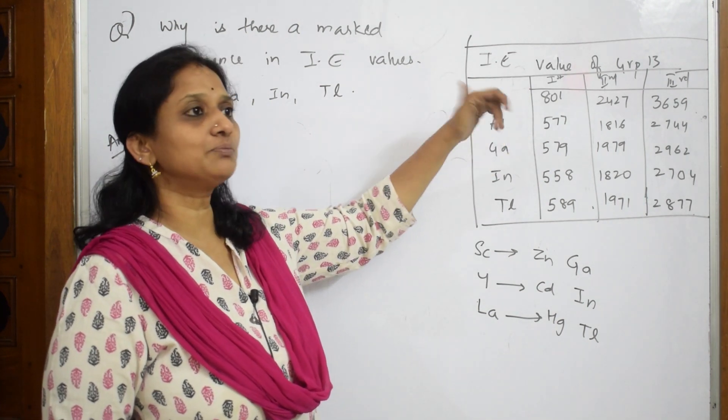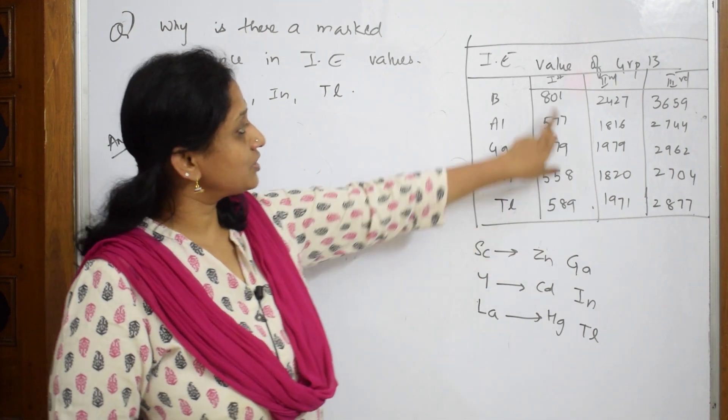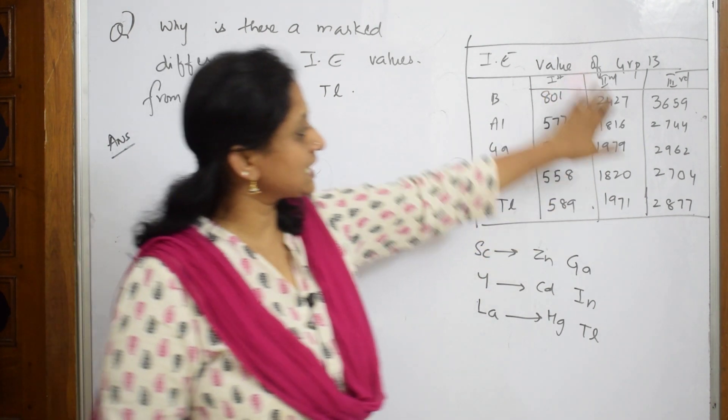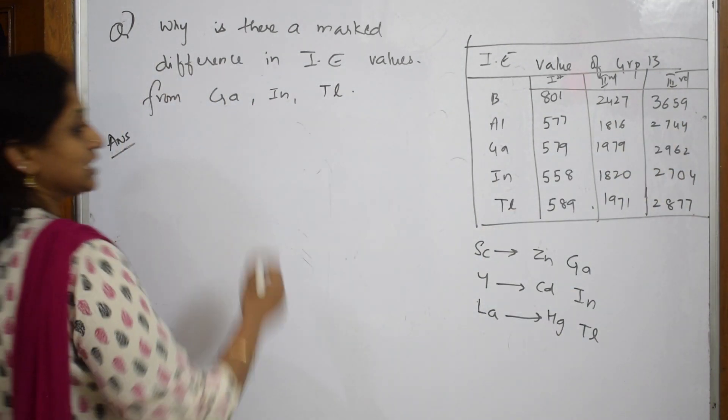This is Group 13: Boron, Aluminum, Gallium, Indium, and Thallium. The first, second, and third ionization enthalpy values are given. They're asking us why is there a difference in Gallium?